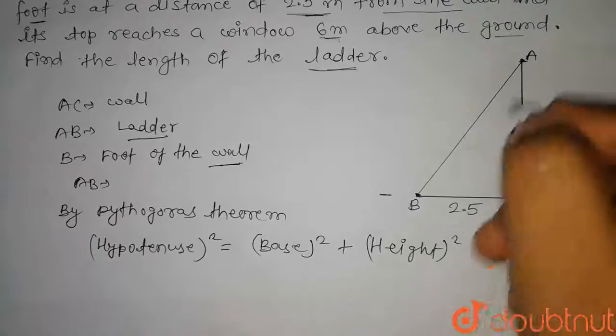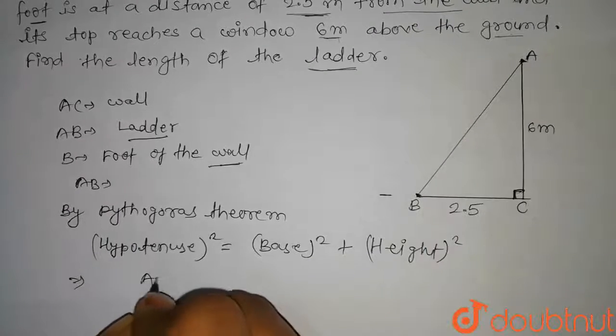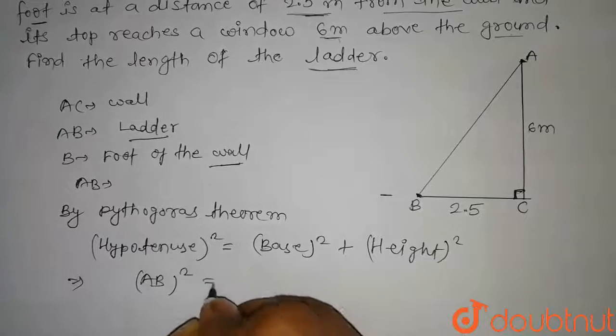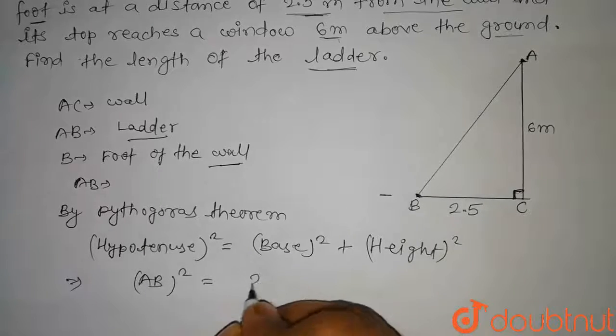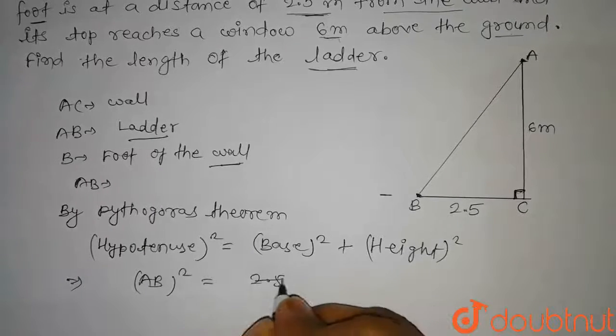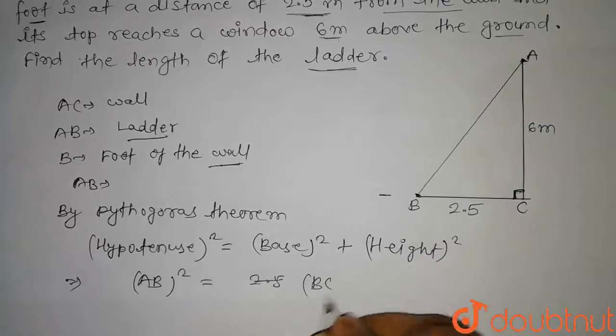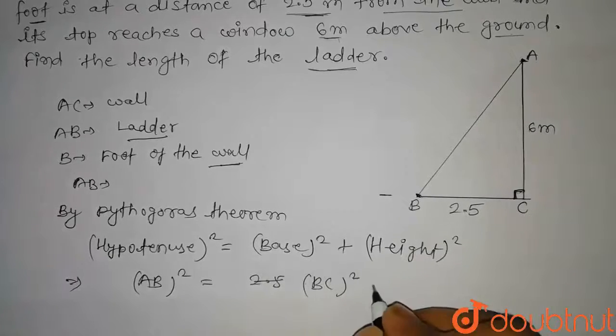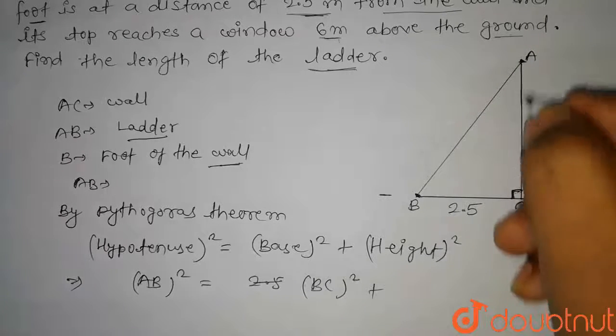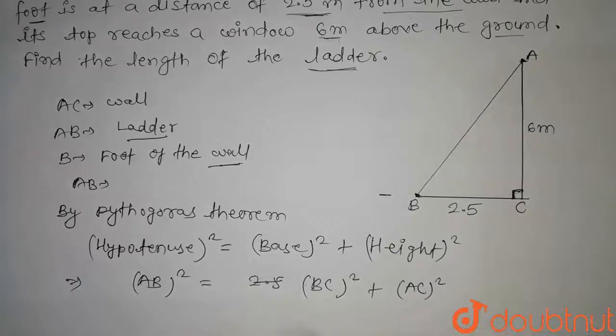In this question, hypotenuse is AB, so AB squared equals base squared. The base is BC, so it's BC squared, plus height squared. Here height is AC, so this is AC squared.